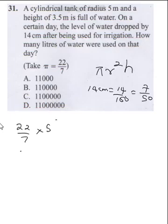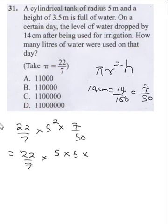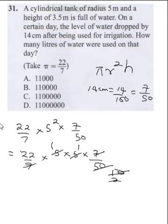The calculation is 22 over 7 times 5 squared times 7 over 50, which is 22 over 7 times 5 times 5 times 7 over 50. The 7s cancel, the 5s and 2s simplify, giving us 11. So our final answer is 11 meters cubed.